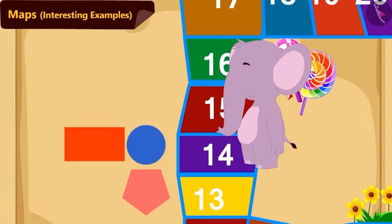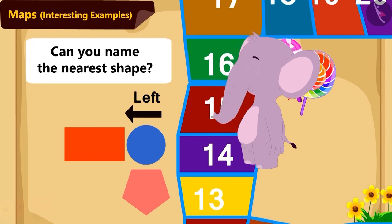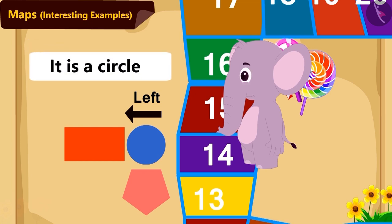On the left side of tile number 14 are paintings of 3 shapes. Among them, can you name the shape nearest to number 14? Yes! It is a circle.